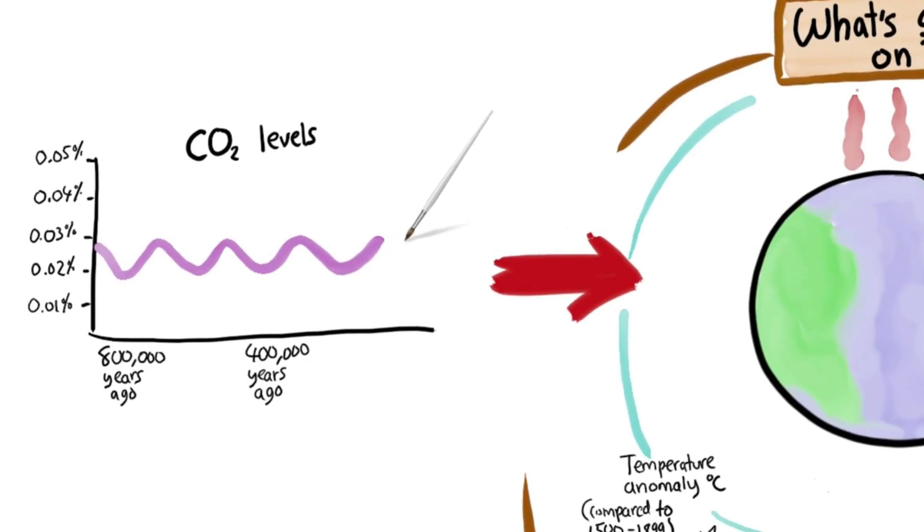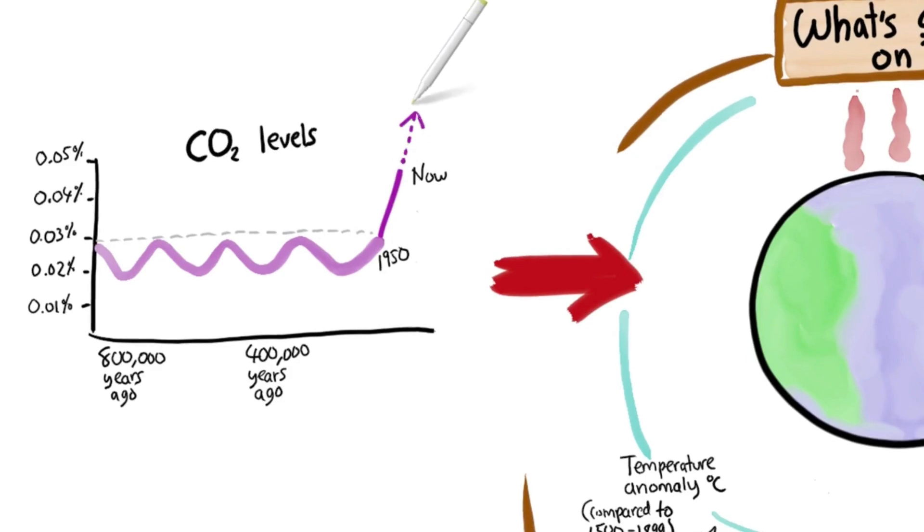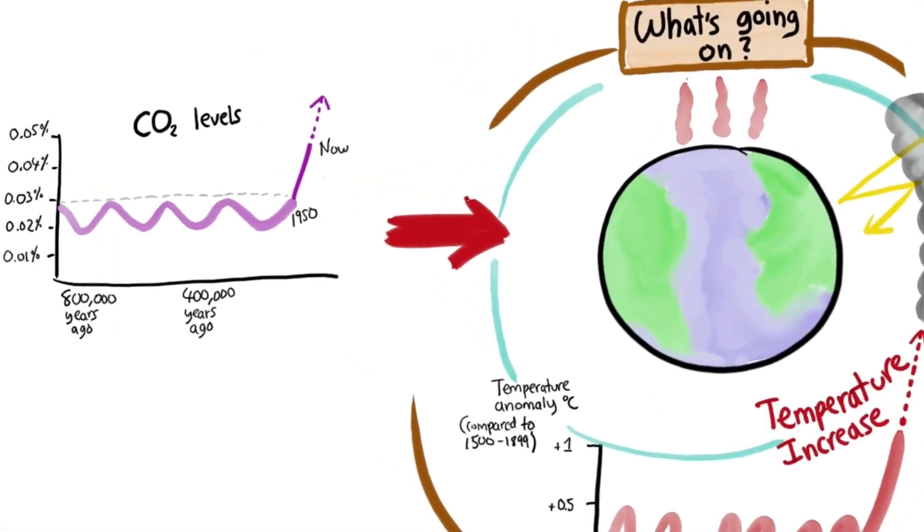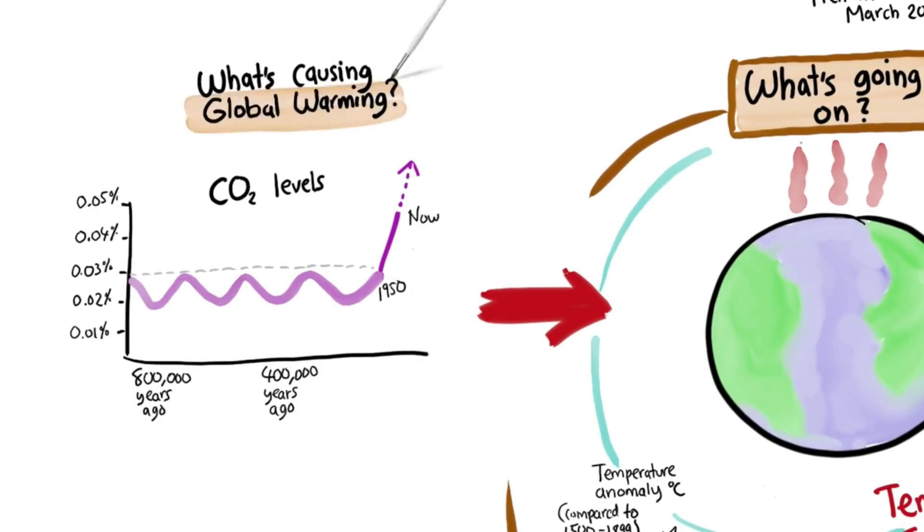But during the past 50 years or so, carbon dioxide concentration has suddenly increased by 40%. In 800,000 years, it's never been above this line. And now suddenly it jumps to here and keeps rising. Rising CO2 levels. Rising temperature. Coincidence? No. Turns out this is the main cause of global warming.